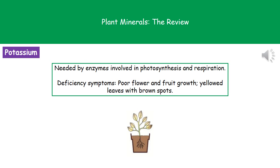The third mineral is potassium. Our plant needs potassium to make the enzymes involved in photosynthesis and respiration. If we don't get enough potassium, we get very poor flower and fruit growth, and the leaves are yellowy in colour with brown spots.